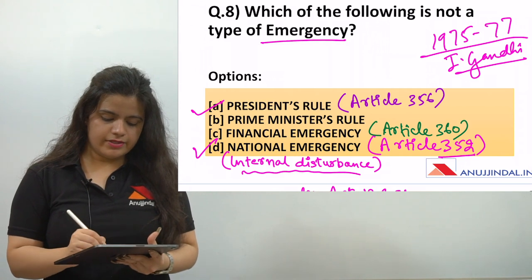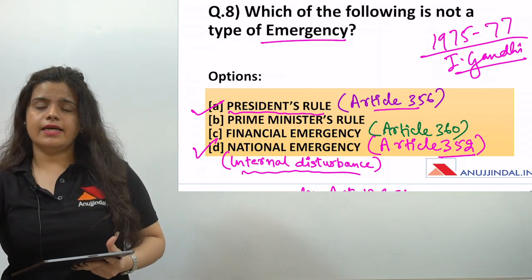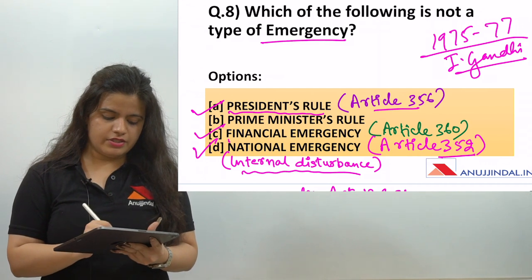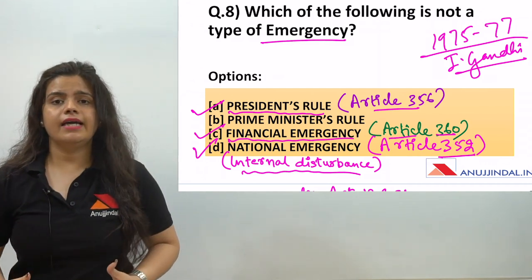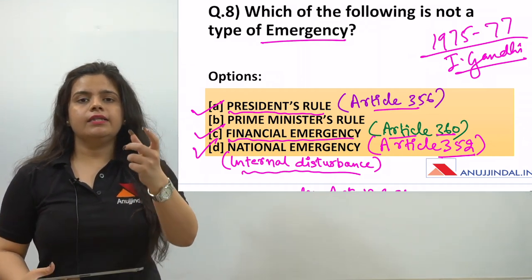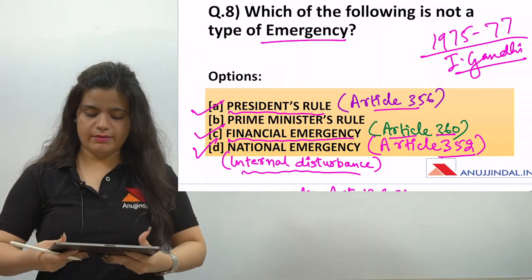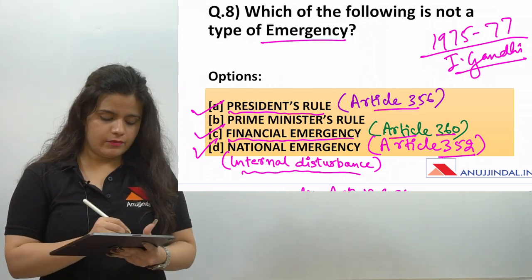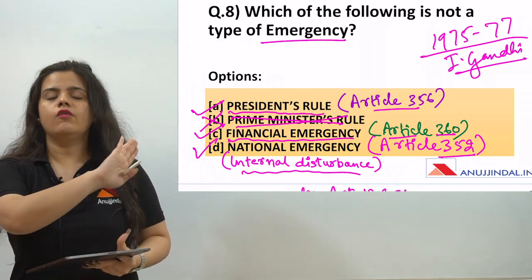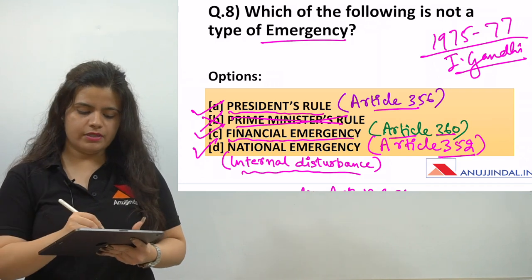Then comes Article 356, that is President's Rule, which also comes under emergency. After that, there is Financial Emergency under Article 360 — if the President feels there are no stable economic conditions, he can declare financial emergency. So which option does not come under emergency types? The answer is Prime Minister's Rule — there is no such thing. So the answer will be option B.